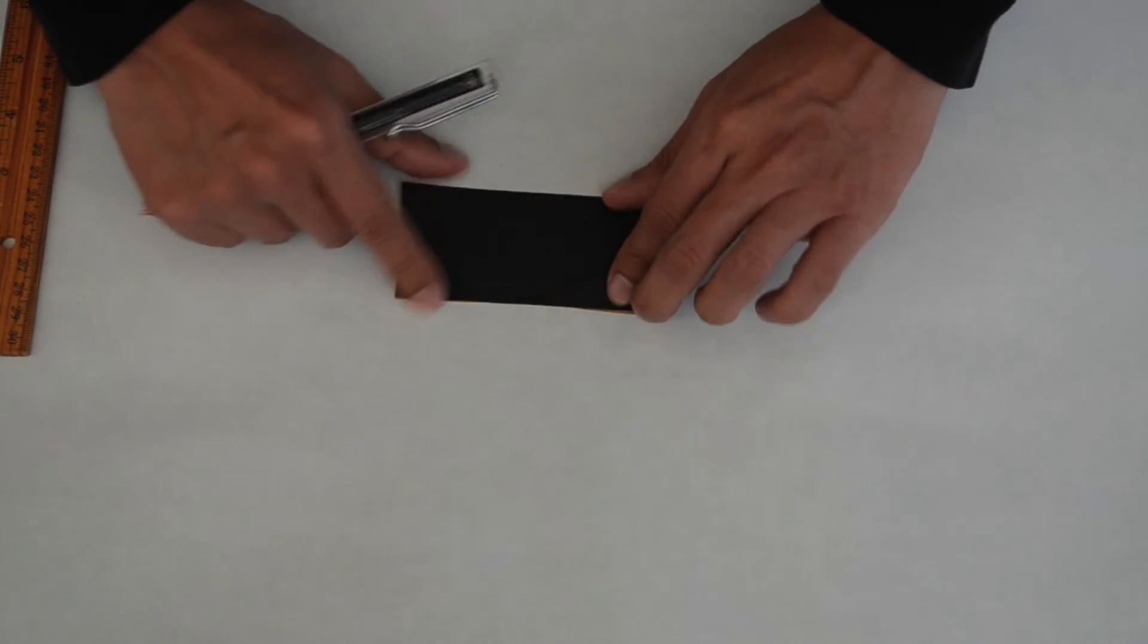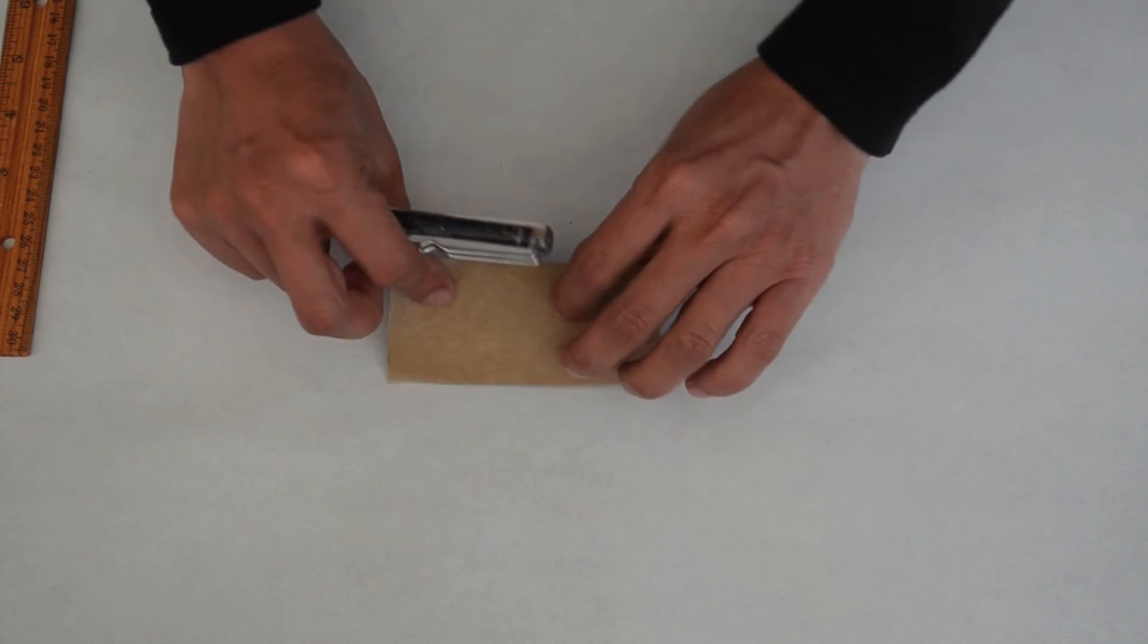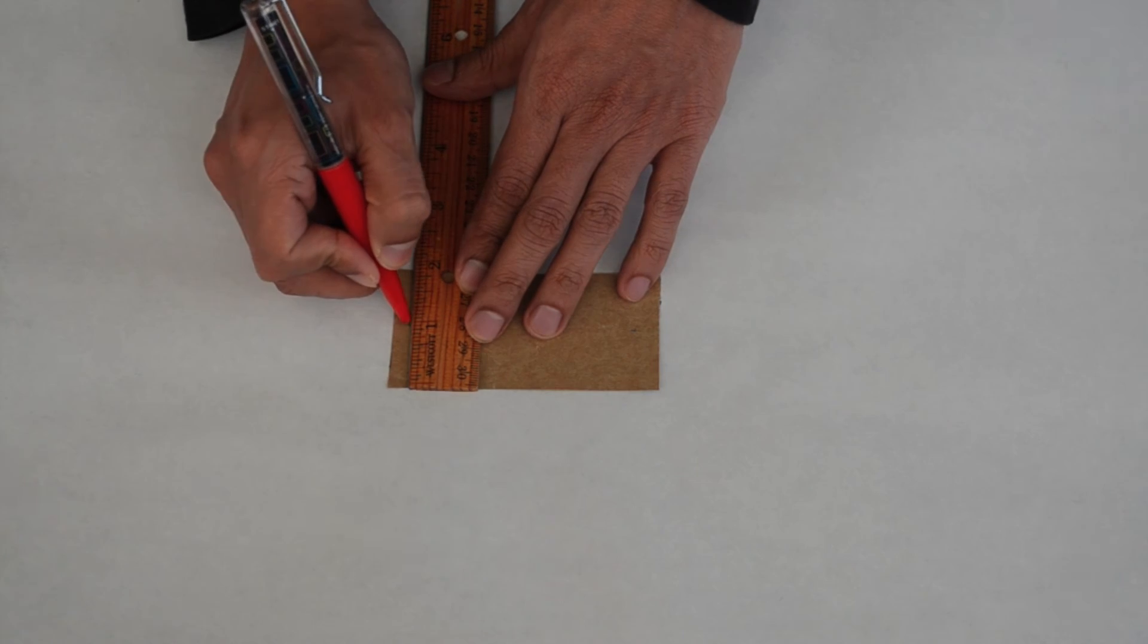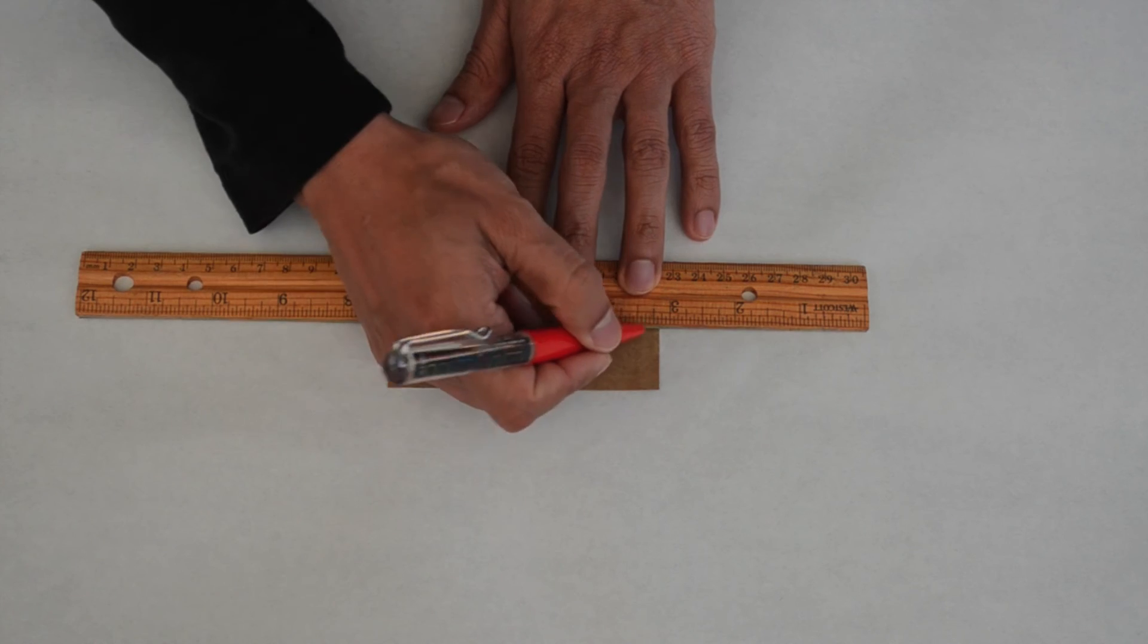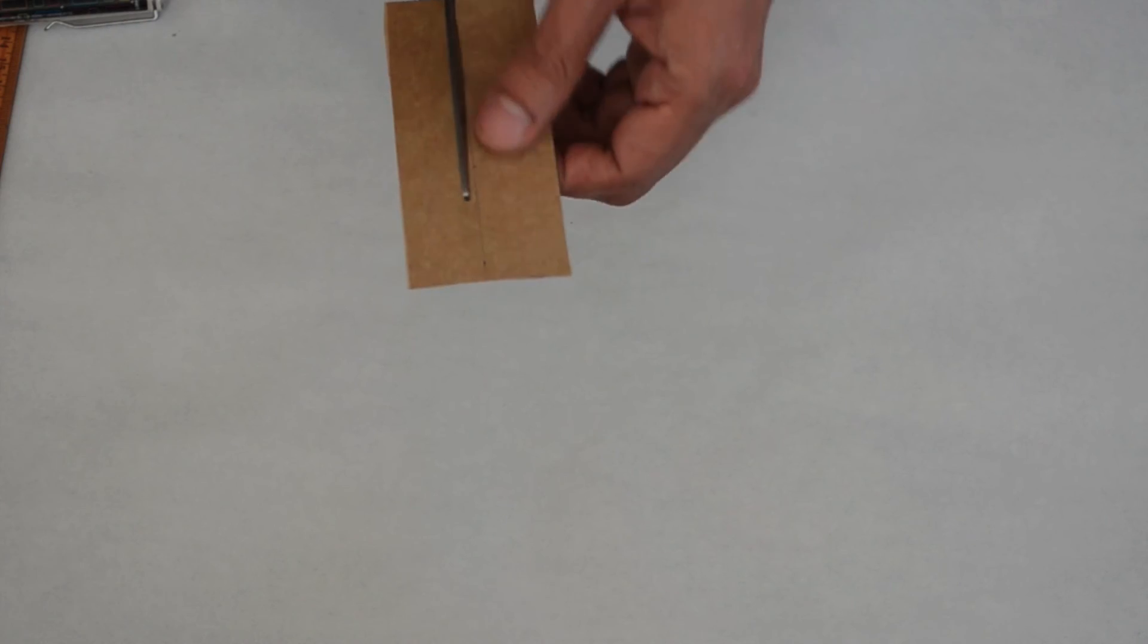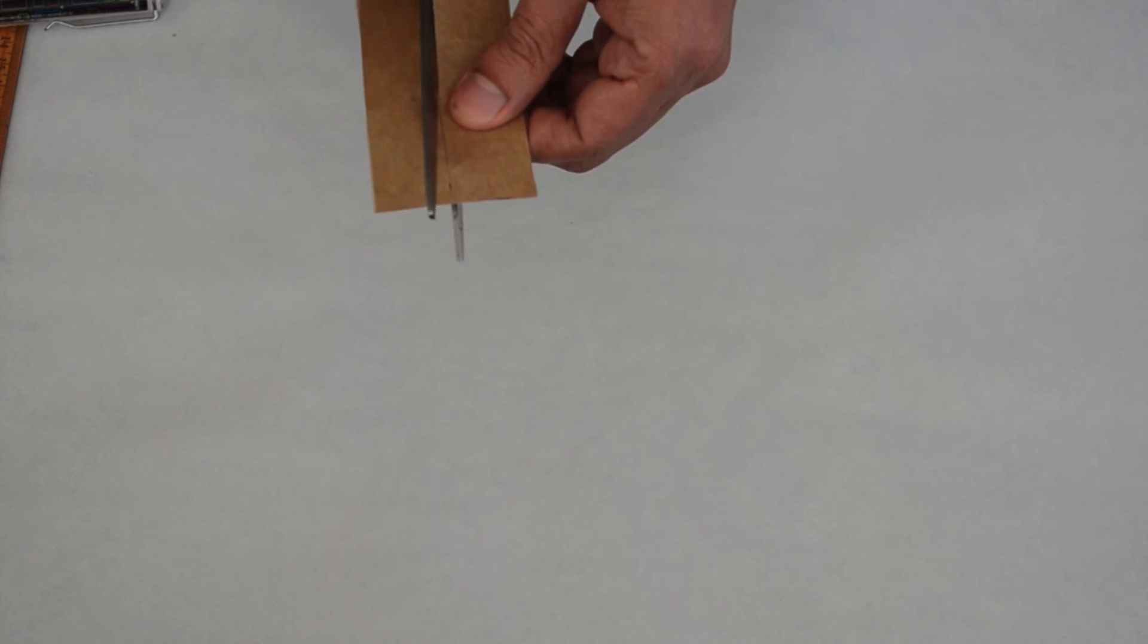To prepare the goff tape, lay it down in front of you black side down in landscape position. Now mark one inch on each edge left and right and use a ruler to draw a straight line between the marks. Cut the tape in two following the line.